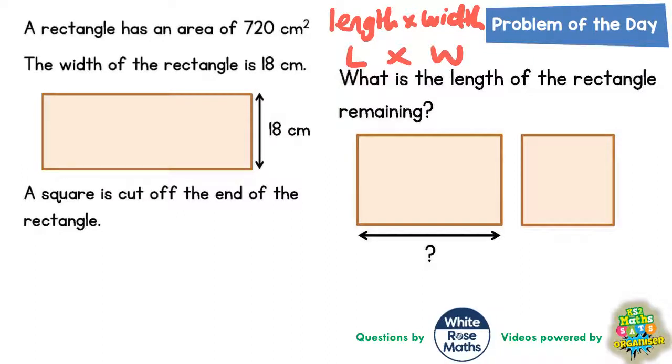Now we get told that the rectangle has an area of 720 cm squared and the width of the rectangle is 18. So what we're going to have to do is find the length because we know that the length times the width is equal to the area.